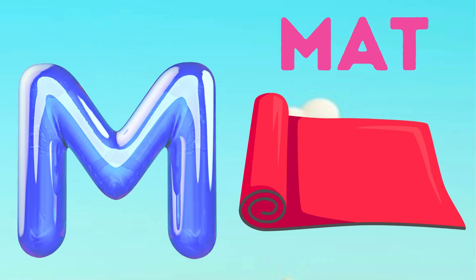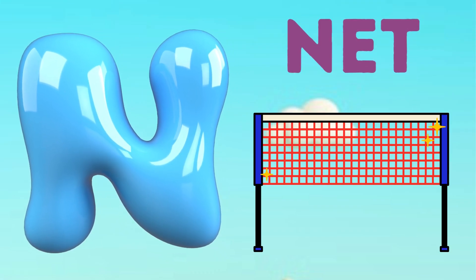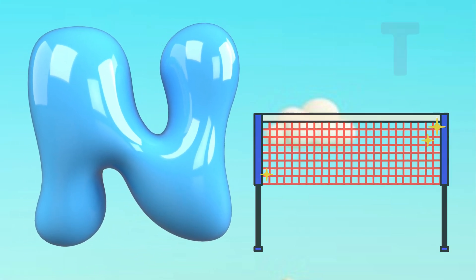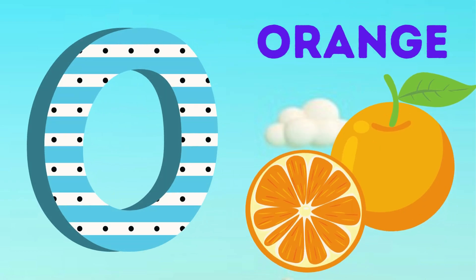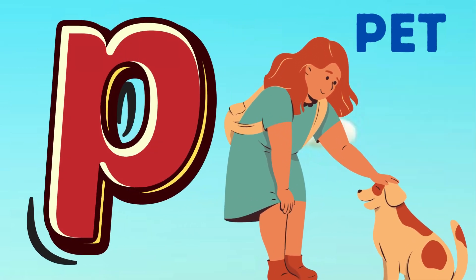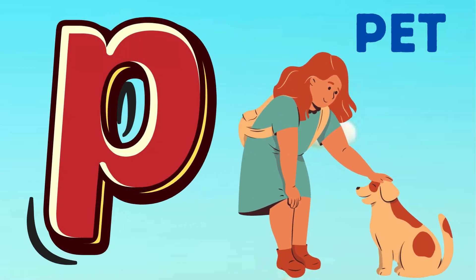M is for mat, m-m-mat. N is for net, n-n-net. O is for orange, o-o-orange. P is for pet, p-p-pet.